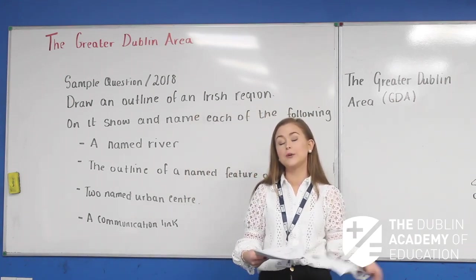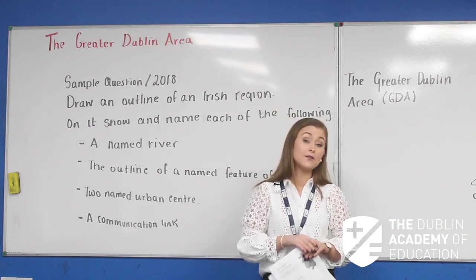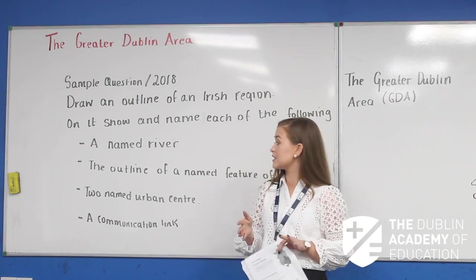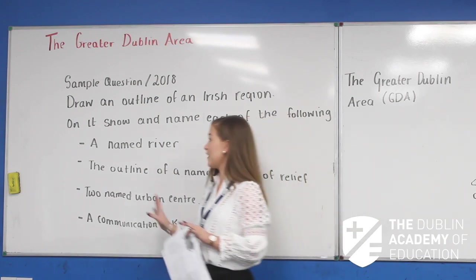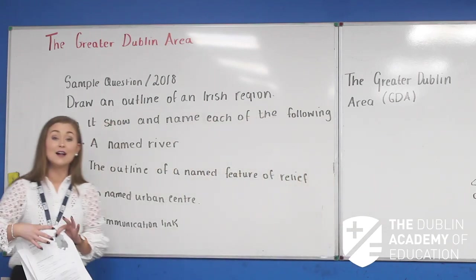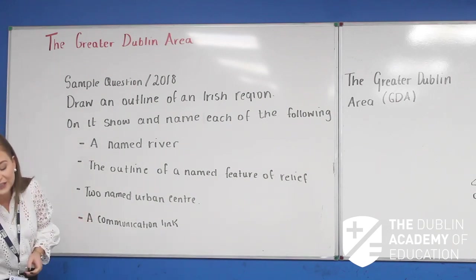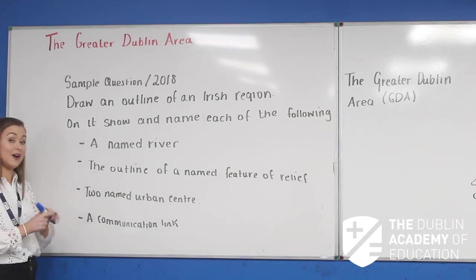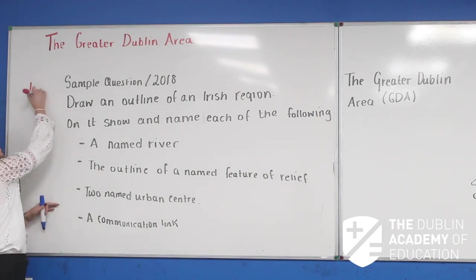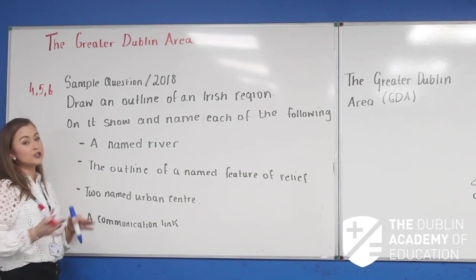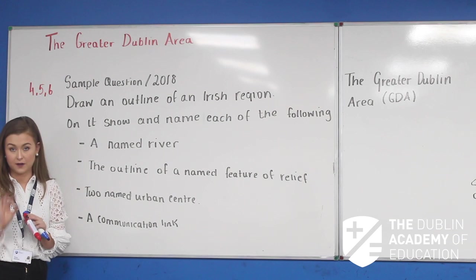Today we're going to start in your GDA notes on page number two, starting with Part A. Some of you may be familiar with this, but for those who joined Geography this year and are in sixth year, you probably won't be. This question is a mixture of a sample and a 2018 question. It's a regional geography question, which means it can come up in your exam paper as question number four, five, and six. Regional geography can also be examined in your short question, so please remember that.